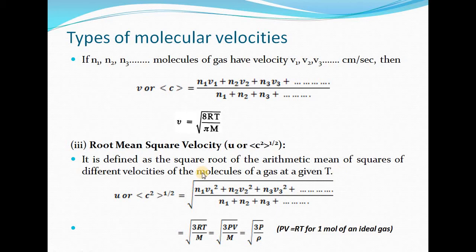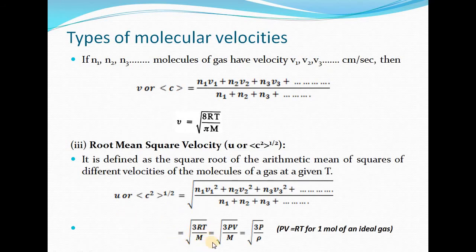If n1 molecules possess velocity V1, n2 possess V2, and n3 possess V3, then root mean square velocity is given by the square root of (n1·V1² + n2·V2² + n3·V3² + ...) divided by the total number of molecules. The mathematical expression is U = √(3RT/m). For one mole of an ideal gas, PV = RT, so 3RT = 3PV. Therefore U = √(3PV/m), and since m/V equals density ρ, we can write U = √(3P/ρ).